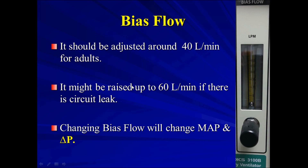We can increase the bias flow up to 60 liters per minute if there is a circuit leak. Changing bias flow will change the mean airway pressure and the delta pressure. So whenever you do any change in this machine, you have to check the other settings. If you change the mean airway pressure, it might affect all of the settings like the delta pressure. Same for the bias flow — if you change it, you affect the mean airway pressure and the delta pressure.